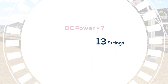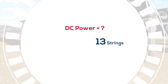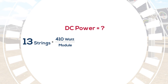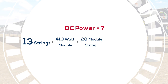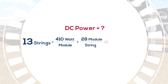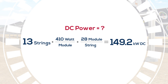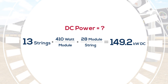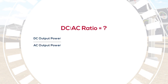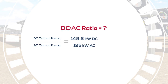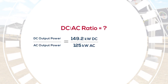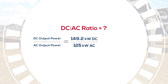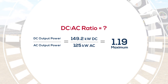The second step is to calculate the DC power, which is 13 strings times 410 watts per module times 28 modules per string, which yields 149.2 kilowatts DC of PV power to each inverter. The final step is to calculate the ratio of DC power to AC power, which is 149.2 kilowatts DC divided by 125 kilowatts AC, or 1.19 maximum.